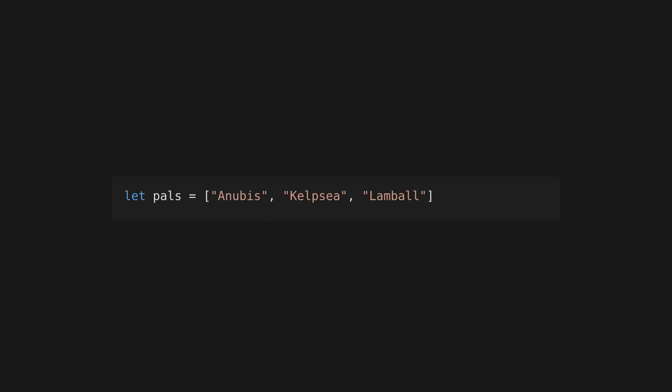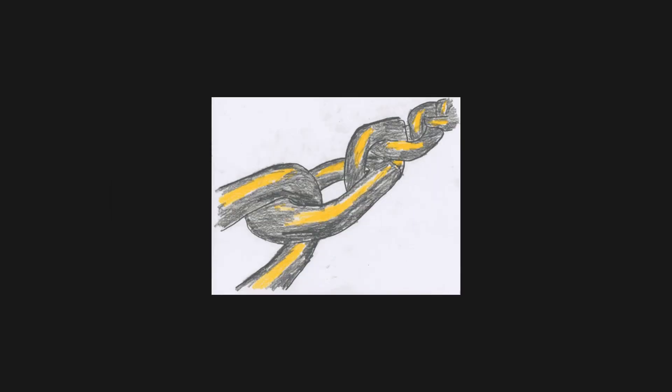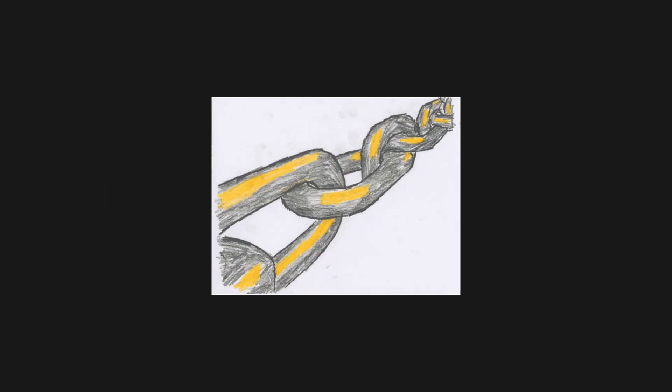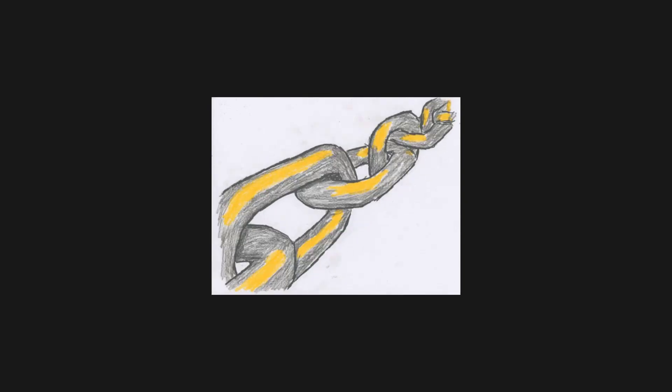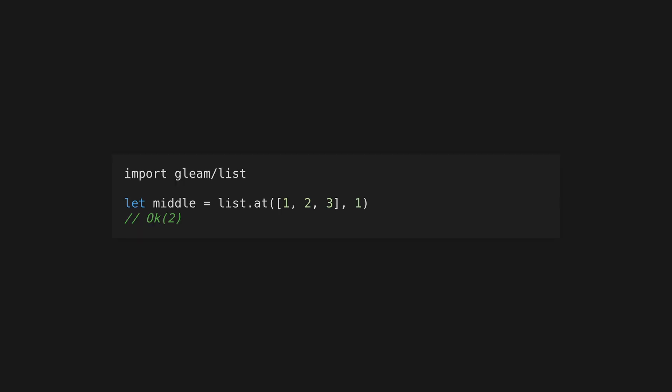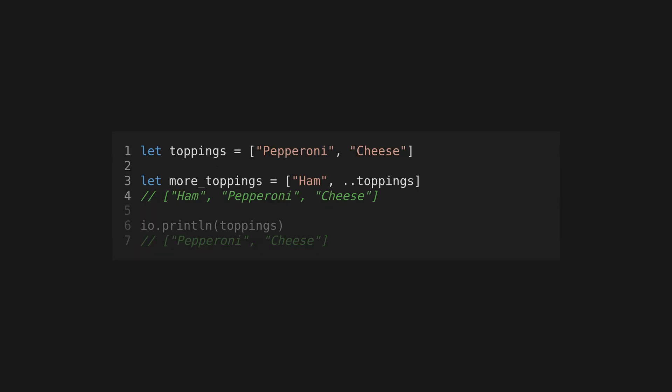Create a list of values using square bracket syntax. Gleam lists are homogeneous and the type annotation uses parentheses to declare the contained type. As with all values in Gleam, lists are immutable and are singly linked lists under the hood, so index accesses and length calculations are expensive. You can add elements to the front of a list using the dot dot syntax, which will not modify the original list.